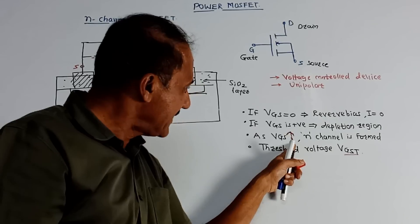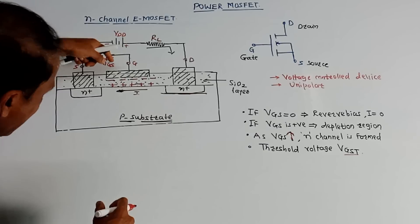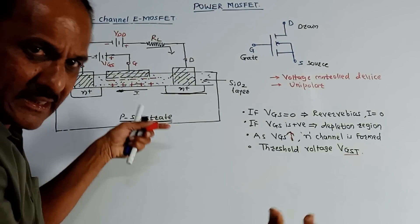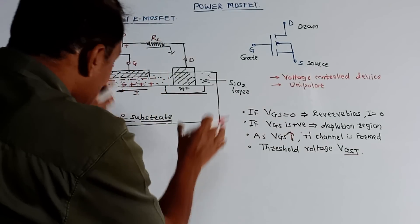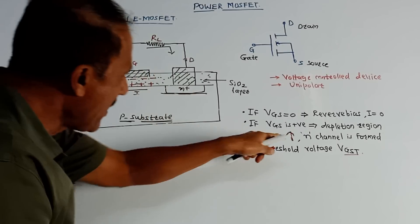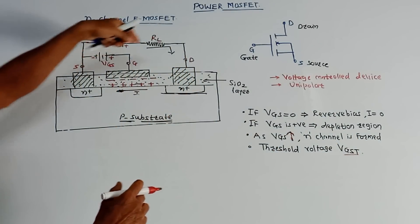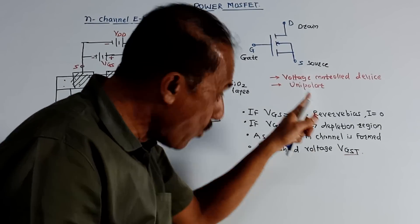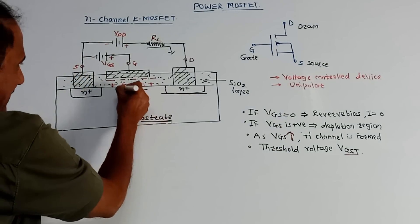As VGS goes on increasing, an N-channel is formed. As you increase VGS, the concentration of electrons moving towards the gate terminal will go on increasing. Due to this, a channel is formed between the two N-plus regions — this is called the N-channel. There is one typical value called VGST, that is the VGS threshold value. Once this value is reached, the channel is formed and conduction of current starts taking place.